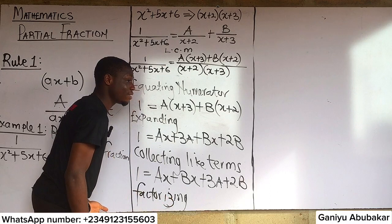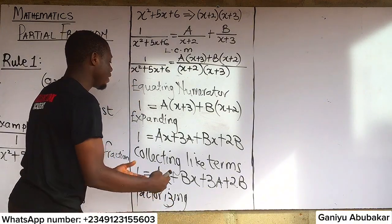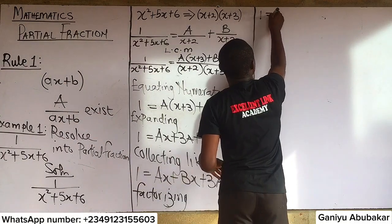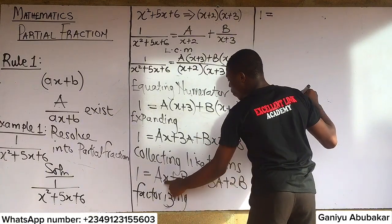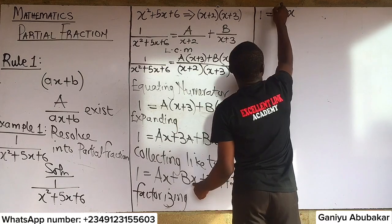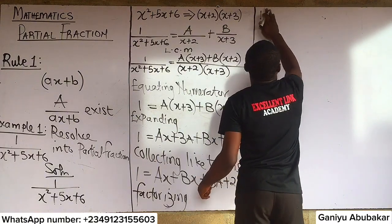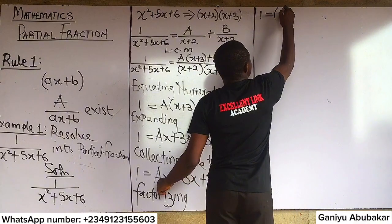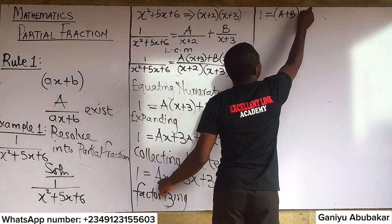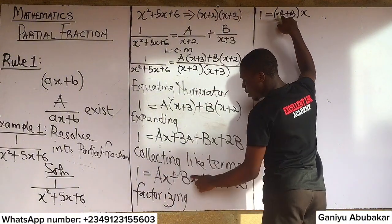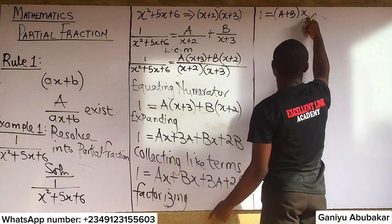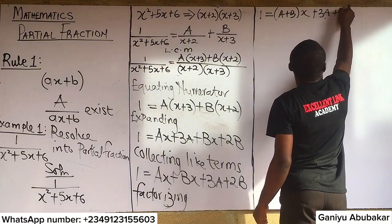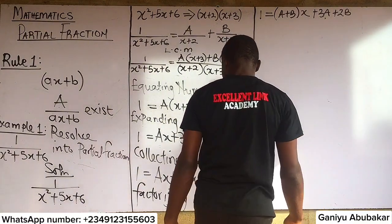Factorizing — bringing out x from the x terms: 1 = x(a + b) + 3a + 2b.